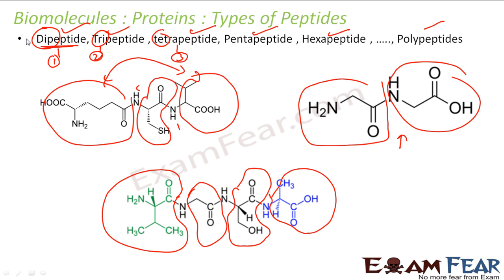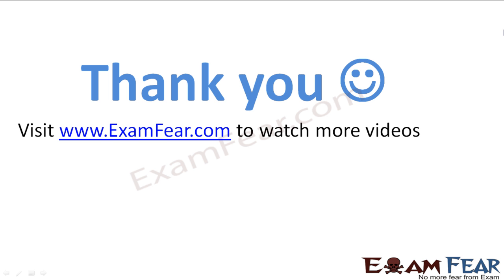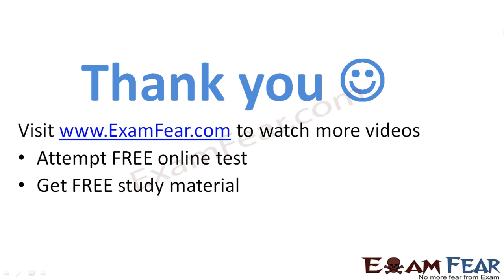And protein — if you have more than 100 amino acids joined together, then it is a protein. Visit examfier.com to watch more videos, attempt free online tests, get pre-study materials, find tutors and mentors, and much more. Thanks once again.